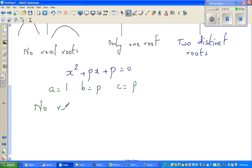No real roots. It's always good to write and remind yourself. This implies delta, which is b squared minus 4ac, is less than 0. Which implies p squared minus 4 times 1 times p, which is 4p, is less than 0.